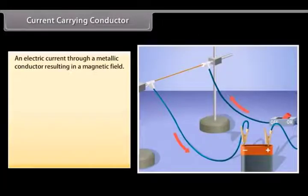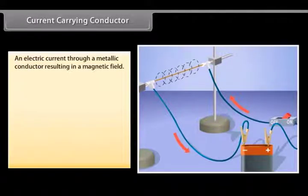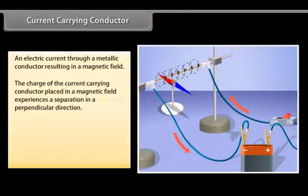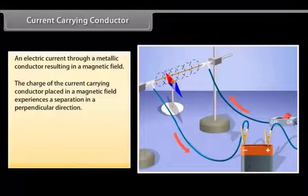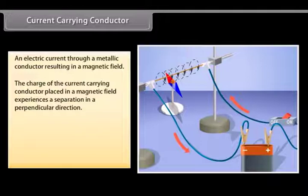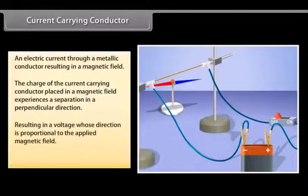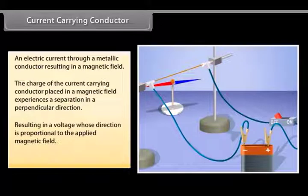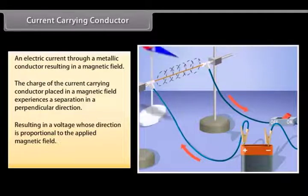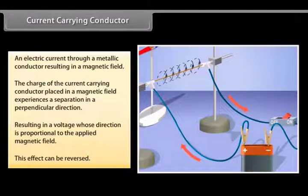An electric current passing through a metallic conductor results in a magnetic field being created around it. The charge of the current carrying conductor placed in a magnetic field experiences a separation in a direction that is perpendicular to the current and the magnetic field. This results in a voltage whose direction is proportional to the applied magnetic field. This effect can also be reversed.